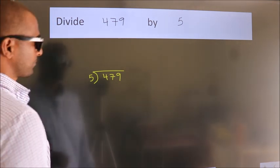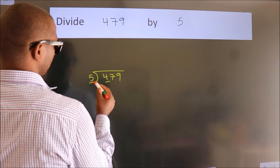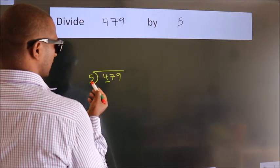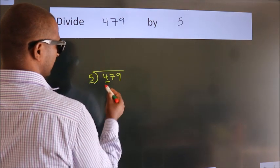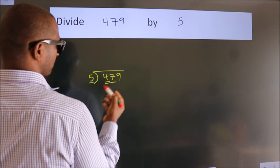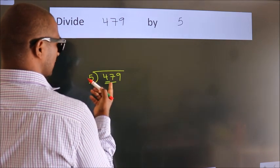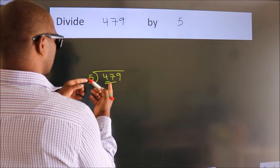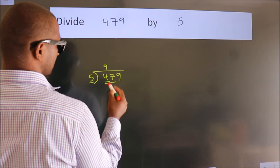Next. Here we have 4, here 5. 4 is smaller than 5, so we should take 2 numbers: 47. A number close to 47 in the 5 table is 5 nines, 45.